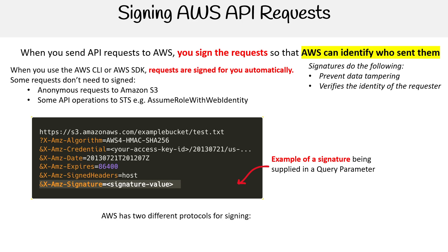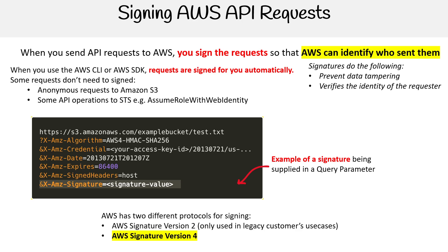AWS has two different protocols for signing: version two, which is the old one that nobody uses anymore, and version four. Let's take a quick look at how to sign with version four, so we have a general idea of how it works.